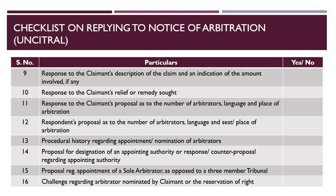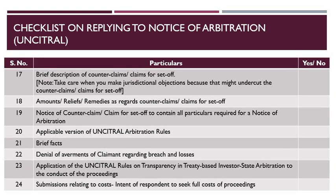The seventeenth item in the checklist is a description of counter-claims or claims for set-off. Take care when making jurisdictional objections, because that might undercut the counter-claims or claims for set-off. We have discussed this issue in the last lecture as well. The eighteenth item is regarding the amounts or reliefs or remedies as regards counter-claims or claims for set-off.